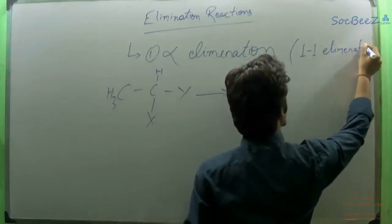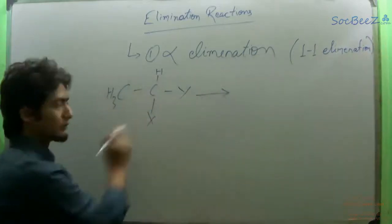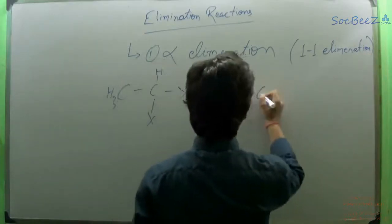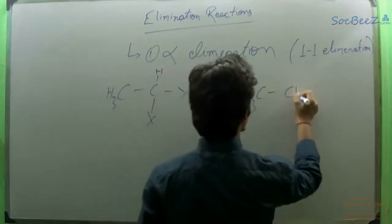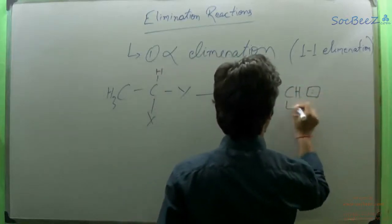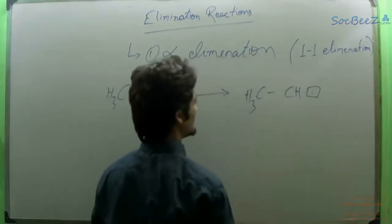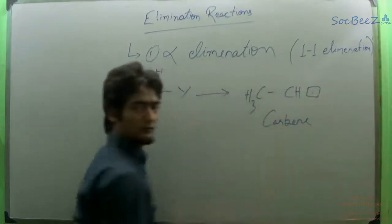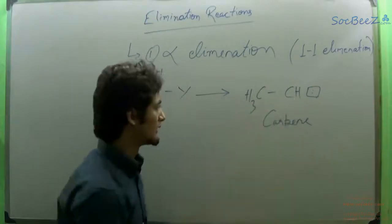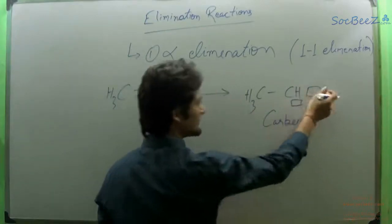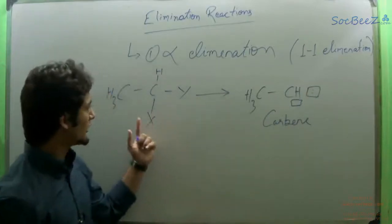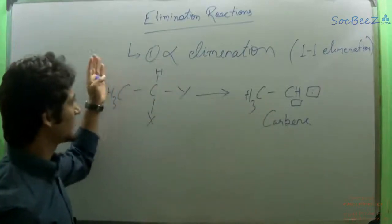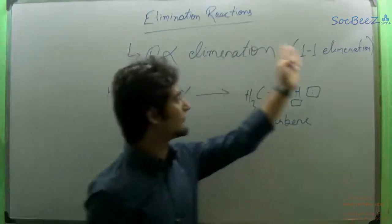Because both the atoms or groups are eliminated from the same carbon, the product in this case will be a carbon atom known as carbene. This carbon has only single valency, one vacant orbital, and one completely filled orbital. So on eliminating two groups from the same carbon atom we form a carbene, and this type of elimination is called alpha elimination or 1-1 elimination.